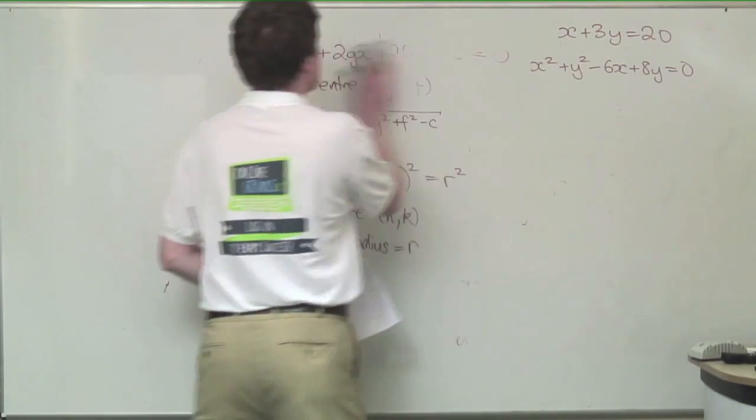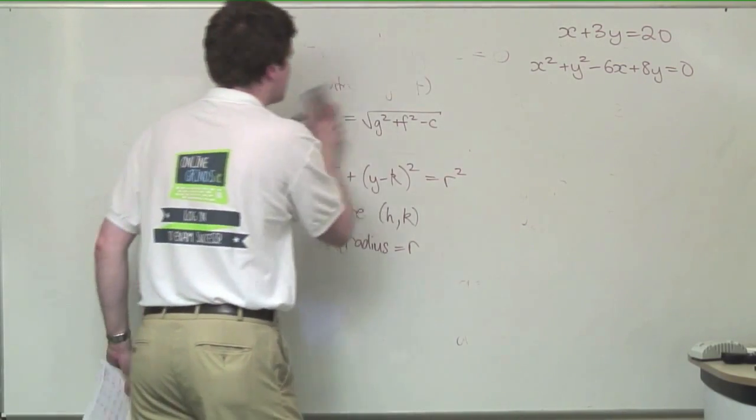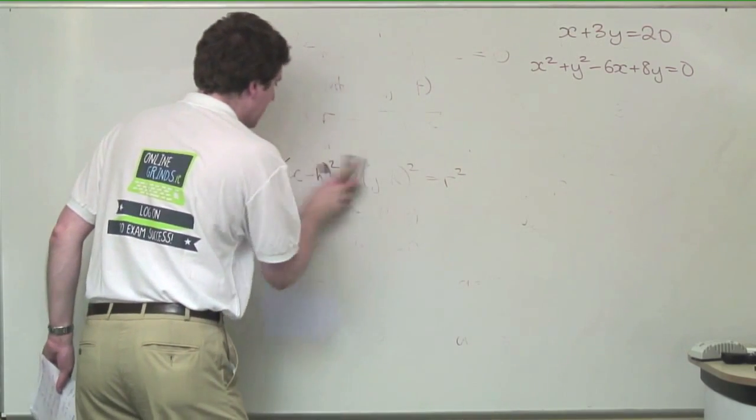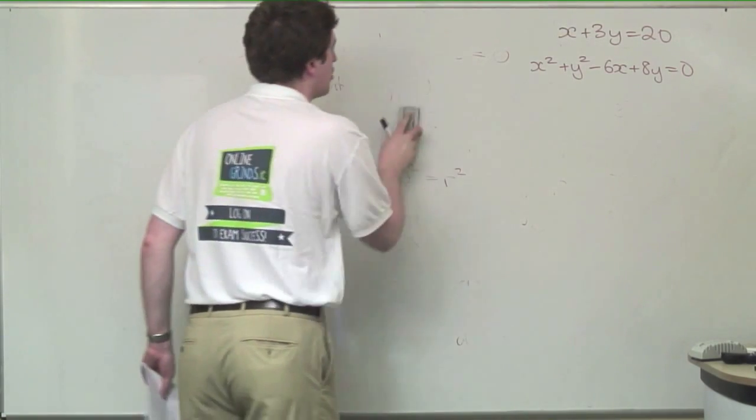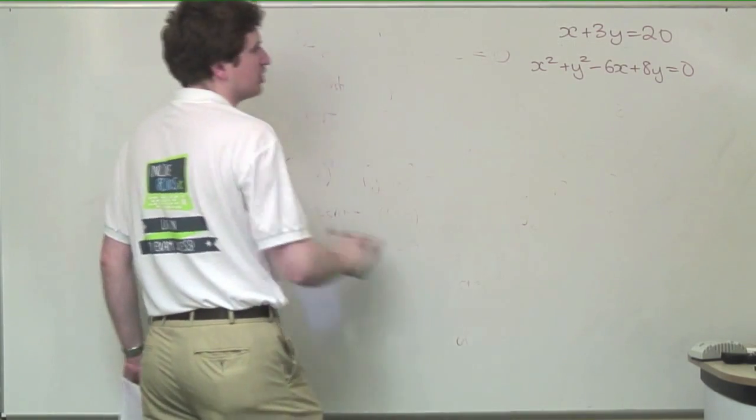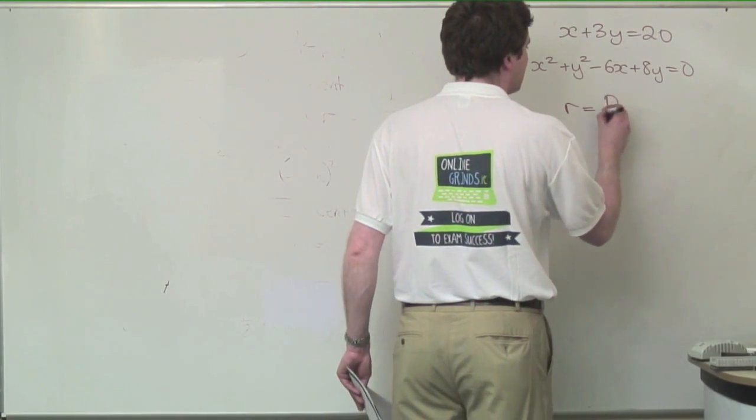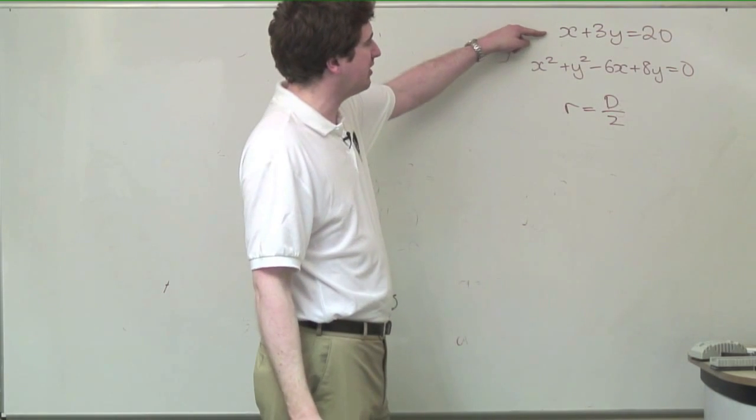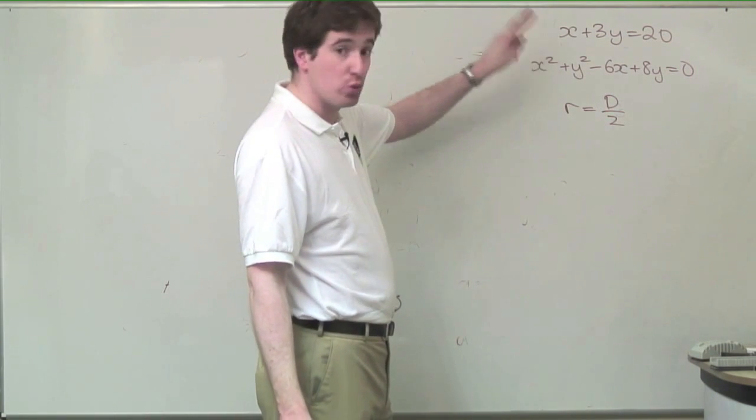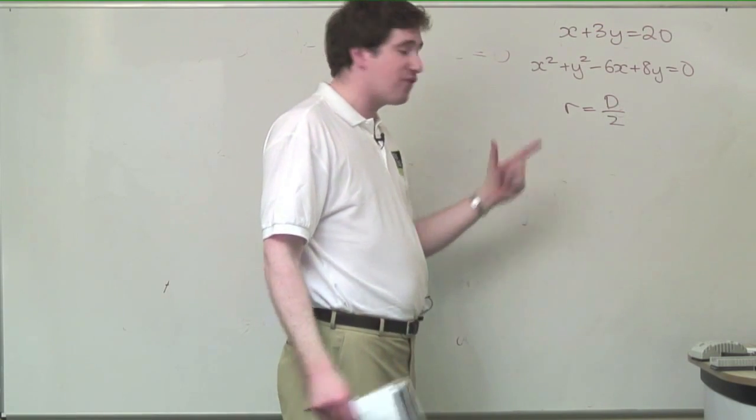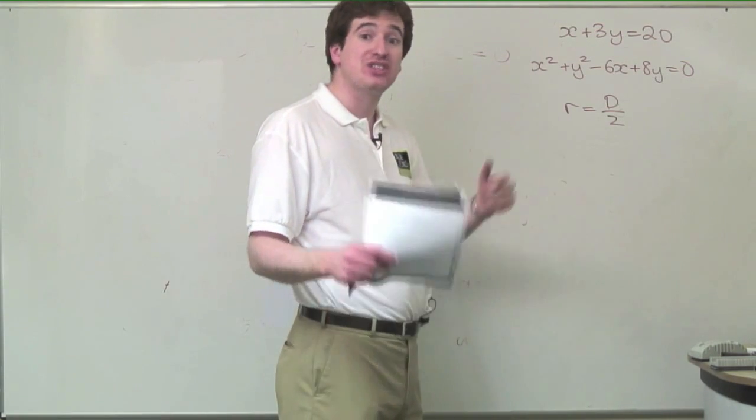So if we have the diameter, we have in effect the radius. The radius is equal to half the diameter. So I see a situation where the radius is going to pop out very nicely. We intersect this line with this circle, we'll get two points. Those two points form the radius. We find the length between those two points, that's the diameter.